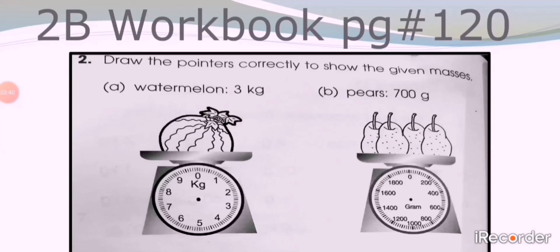Question number two: draw the pointers correctly to show the given masses. Part A: watermelon. The mass of watermelon is given, that is 3 kg. You can see a kg scale and a watermelon is placed on it. There are different markings starting from 1 till 10, and you will choose the correct number and draw the pointer there according to the given mass.